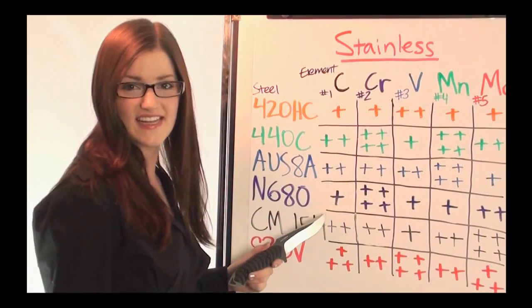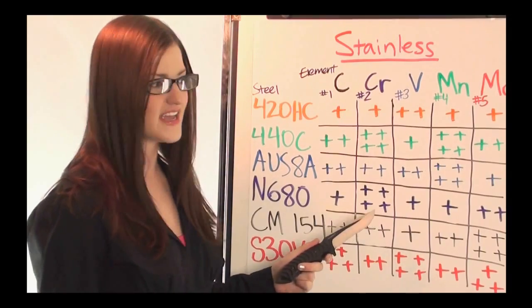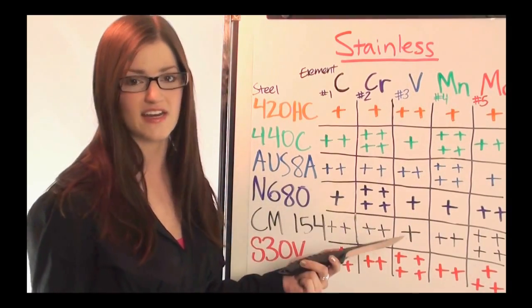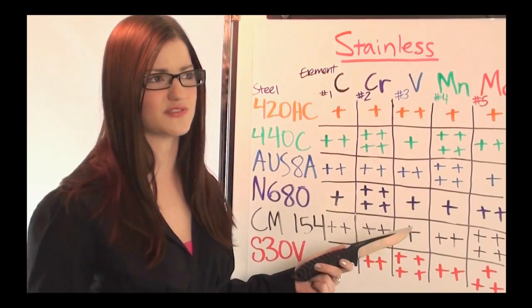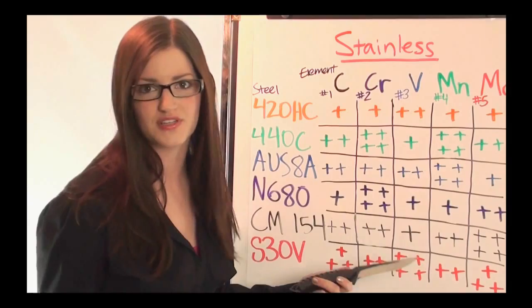Now the N680 is a unique steel. You can see right here it's got a really high chromium content, has a couple of other things in there that are not on this chart, and it is a steel rated to do well against environments like high salt or high corrosion.